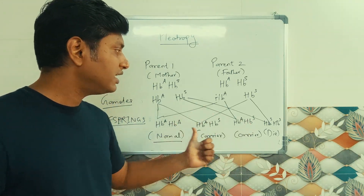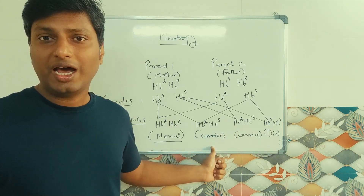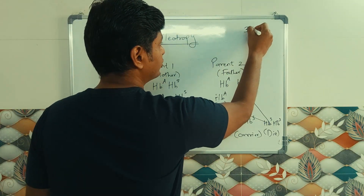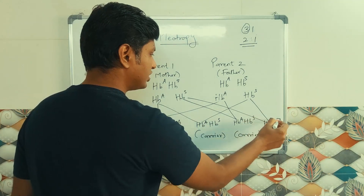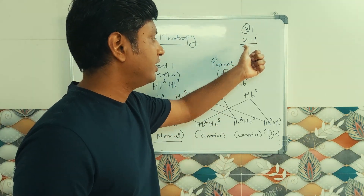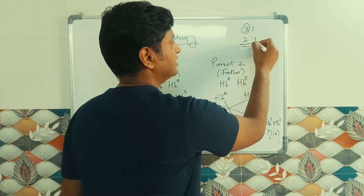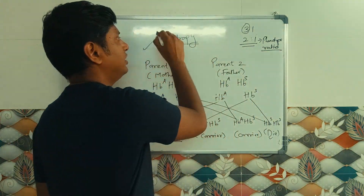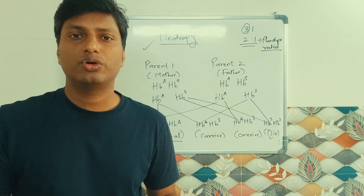Out of four offspring, only three survive because the fourth (HbS/HbS) dies due to the lethal condition. Out of the three survivors, one is healthy and two are in the carrier state. So instead of a 3:1 ratio, the ratio comes out as 2:1. This is the phenotypic ratio in the case of pleiotropy — always remember, in pleiotropy we get a 2:1 ratio instead of a 3:1 ratio.